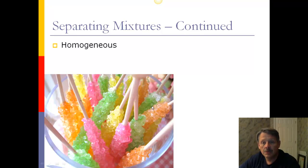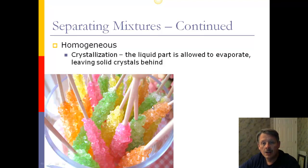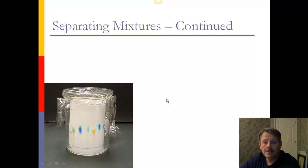Another thing that we can do is, for a homogeneous mixture, we can make it hot, and then we can crystallize it. And the liquid part is allowed to evaporate, leaving the solid crystals behind. You see something here, and you should all know what that is. That is rock candy. That's exactly how rock candy is made. That's exactly how gemstones are created.